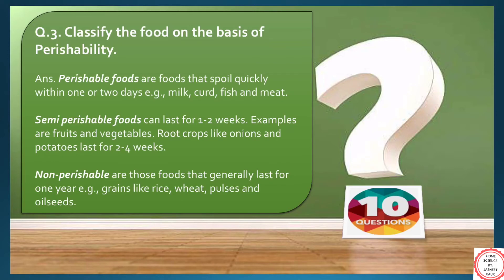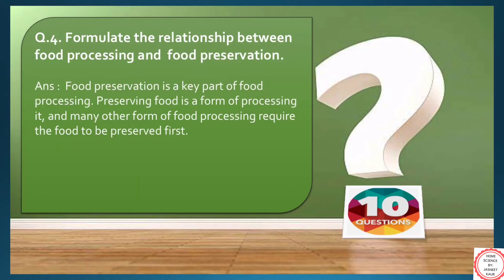Moving on to question number 4: the relationship between food processing and food preservation. In simple words, it can be understood like this — for preserving foods, we have to process food first. Different forms of processing techniques can be used for food preservation.